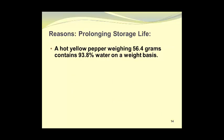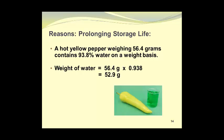A hot yellow pepper weighing 56.4 grams was found to contain 93.8% water on a weight basis. The weight of the water can be found by taking the weight of the pepper, times the percent water as a decimal fraction, to give 52.9 grams of water. And here we see that pepper with 52.9 grams of water in a beaker, and the water has been colored to show up better in the photograph. So there will only be 3.5 grams of solids present in that hot yellow pepper.